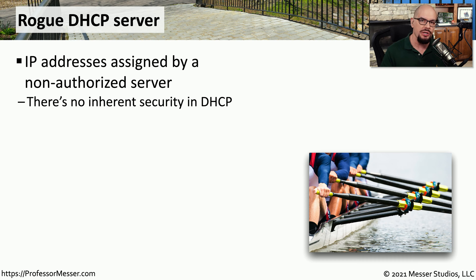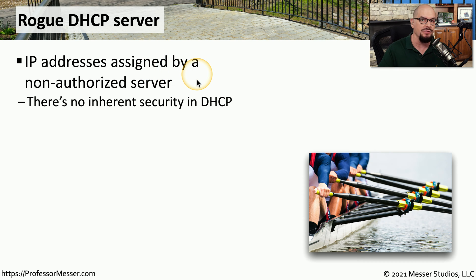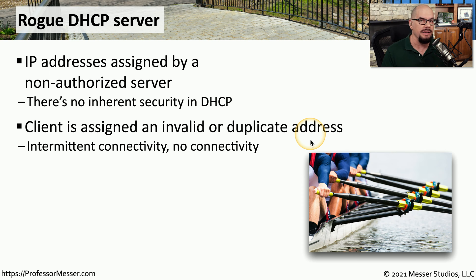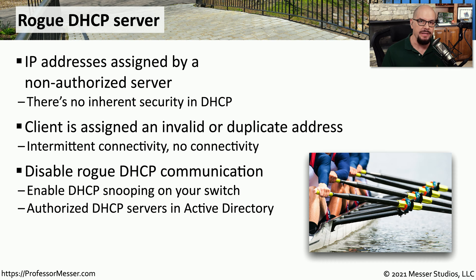However, there's no security built into DHCP. That means that an attacker could create their own DHCP server and start handing out IP addresses from an attacker instead of IP addresses from the legitimate network administrator. If the attacker is using IP addresses that overlap with the existing DHCP server, then there could be invalid or duplicate addresses being handed out to other people's workstations, and they would either have intermittent connectivity or no connectivity at all.